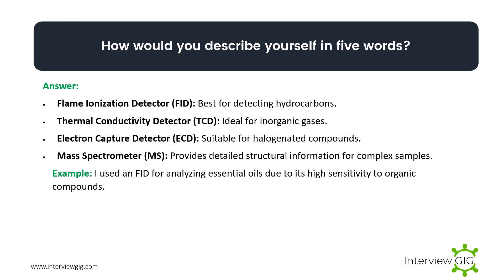What types of detectors are commonly used in GC? The commonly used detectors include: flame ionization detector (FID), best for detecting hydrocarbons; thermal conductivity detector (TCD), ideal for inorganic gases; electron capture detector (ECD), suitable for halogenated compounds; and mass spectrometer, which provides detailed structural information for complex samples. Example: I use an FID for analyzing essential oils due to its high sensitivity to organic compounds.